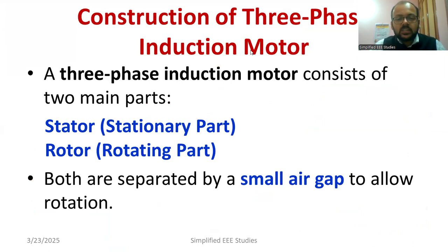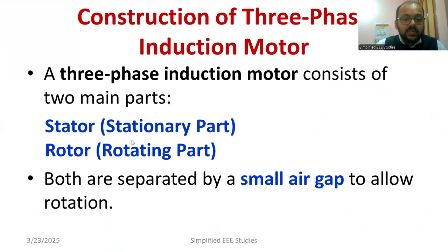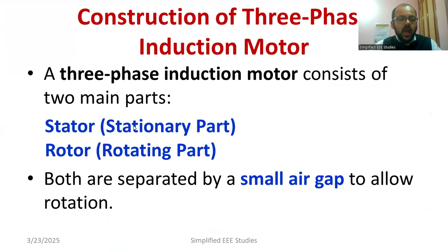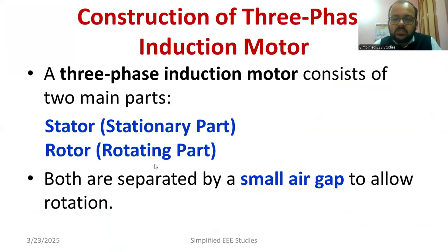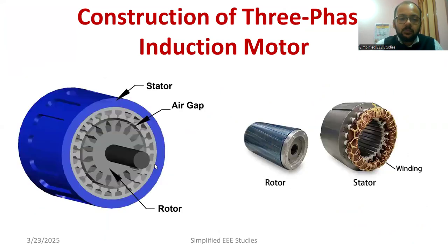A three-phase induction motor comprises two important components. The first one is the stator, which is the stationary part where you provide the supply. The other one is called the rotor, which is the rotating part of the motor. The rotor and stator are separated by a small air gap.